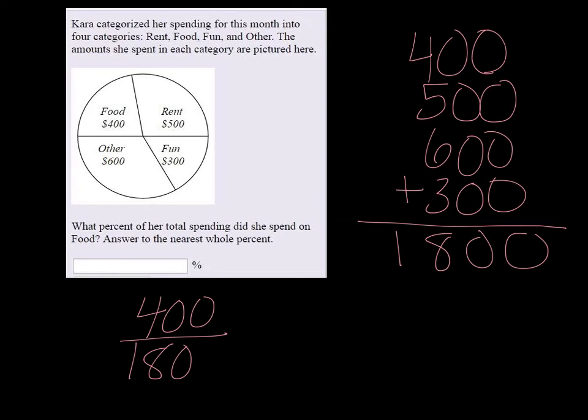400 out of 1,800, that's 0.222 repeating. And it says to round our answer to the nearest whole percent, so if we convert this to a percent we would get 22%.